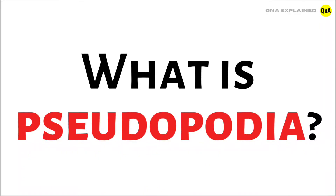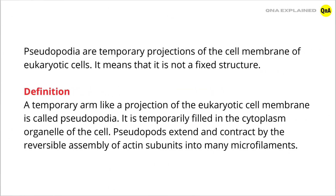What is Pseudopodia? Pseudopodia are temporary projections of the cell membrane of eukaryotic cells. It means that it is not a fixed structure. The definition is a temporary arm-like projection of the eukaryotic cell membrane.